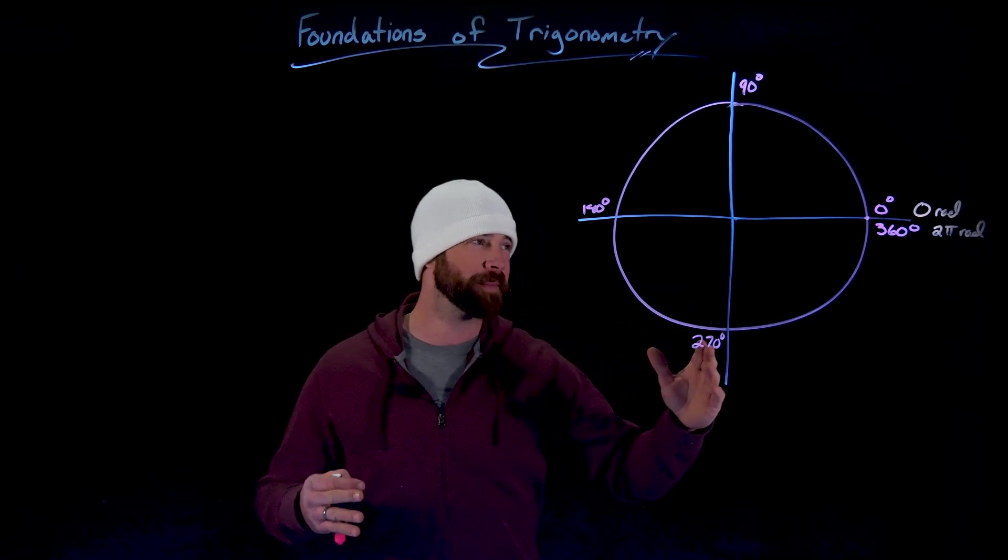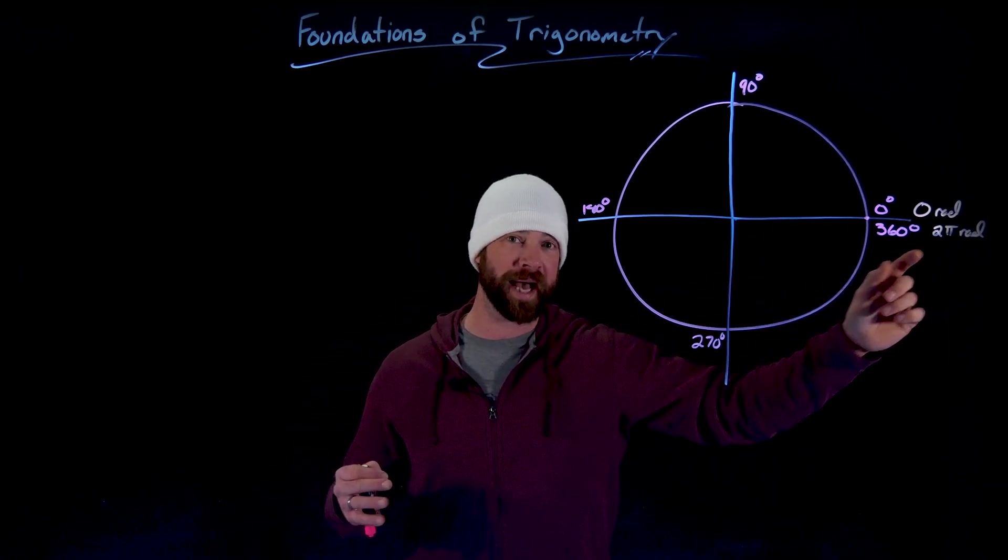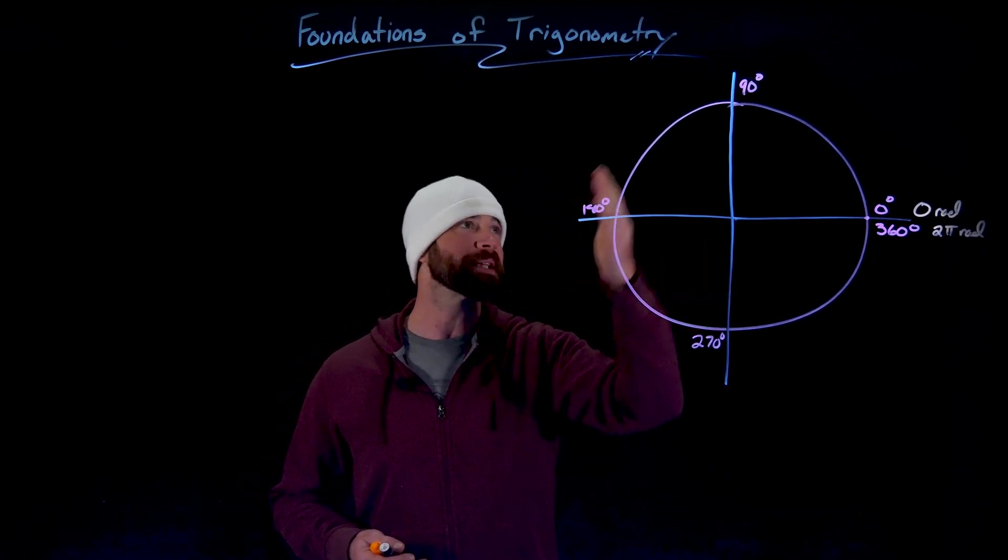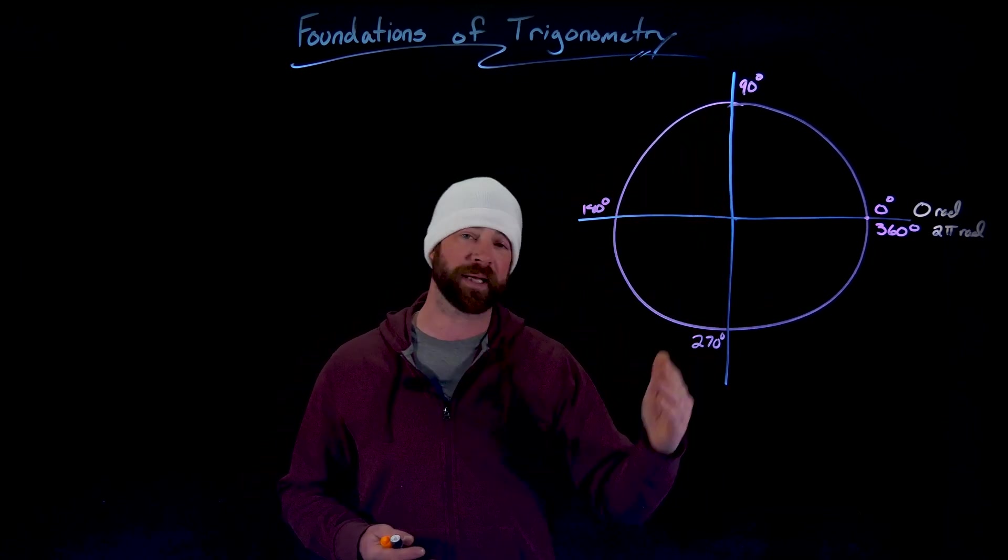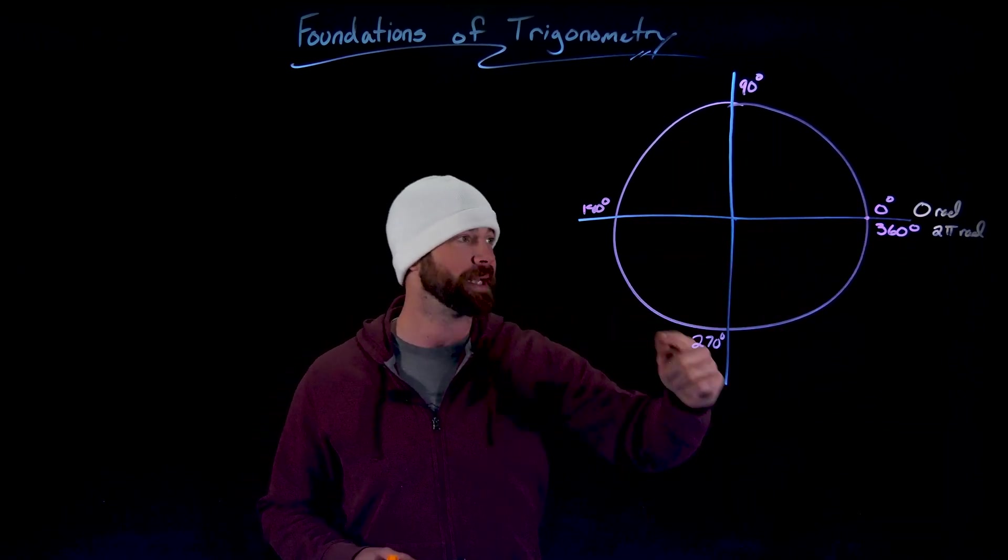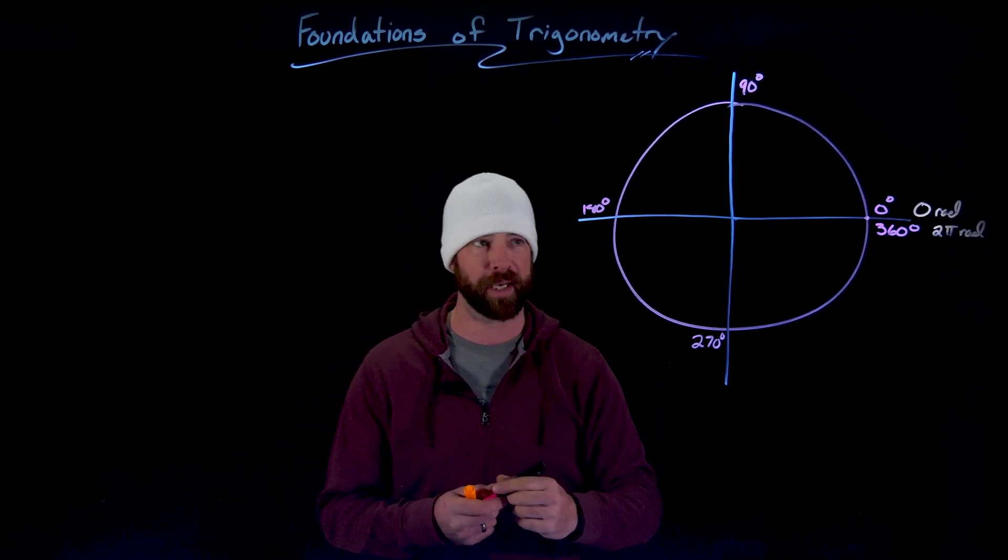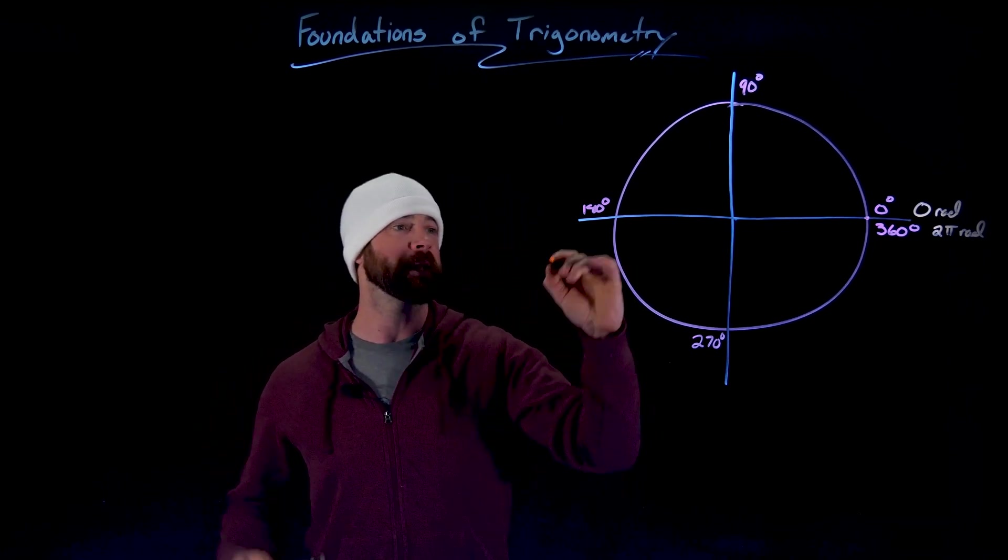And then just to finish this information off, based off of that two pi radians be taken to complete the circle, we can do exactly the same work we did with the 90, 180, and 270 here. If it takes two pi radians to get all the way around, halfway around would be one pi radians or simply pi radians.